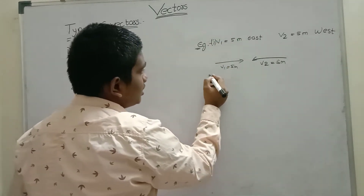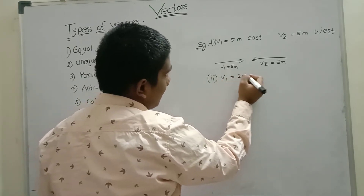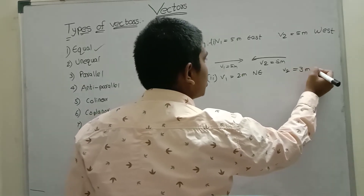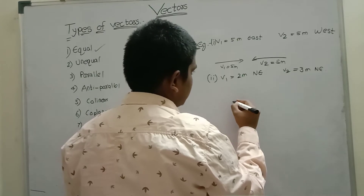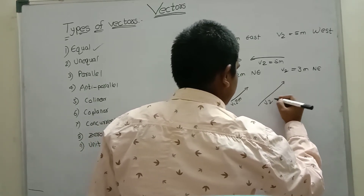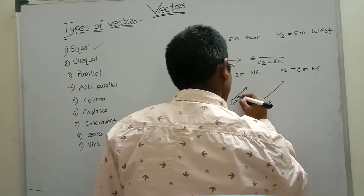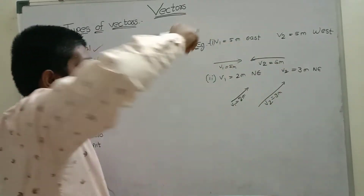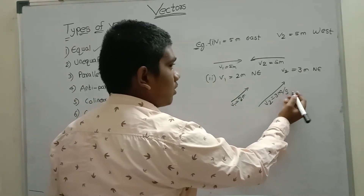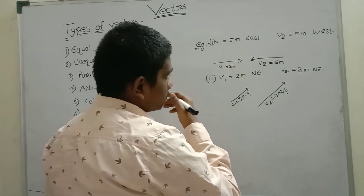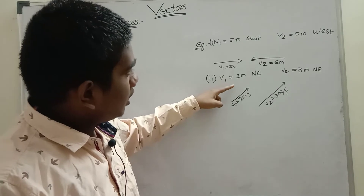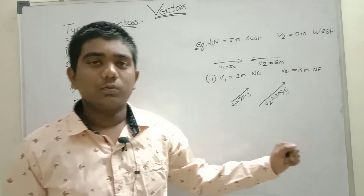Another case of unequal vectors: if directions are the same but magnitudes are not the same — for example, V1 is 2 meters North East and V2 is 3 meters North East. Both are in North East direction, but magnitude is changing: 2 meters and 3 meters. The magnitude is not the same, so these are unequal vectors.